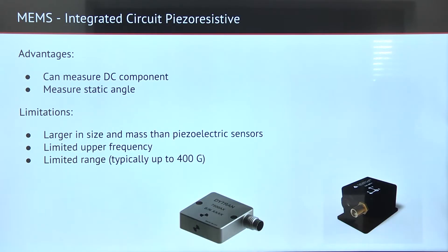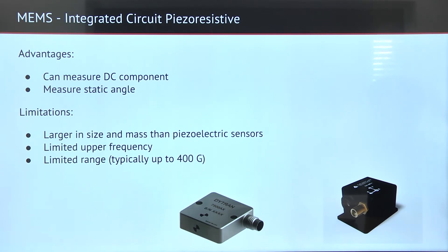MEMS accelerometers are really good because they can measure the DC component, but they need to be larger in size and they have a limited upper frequency and range.